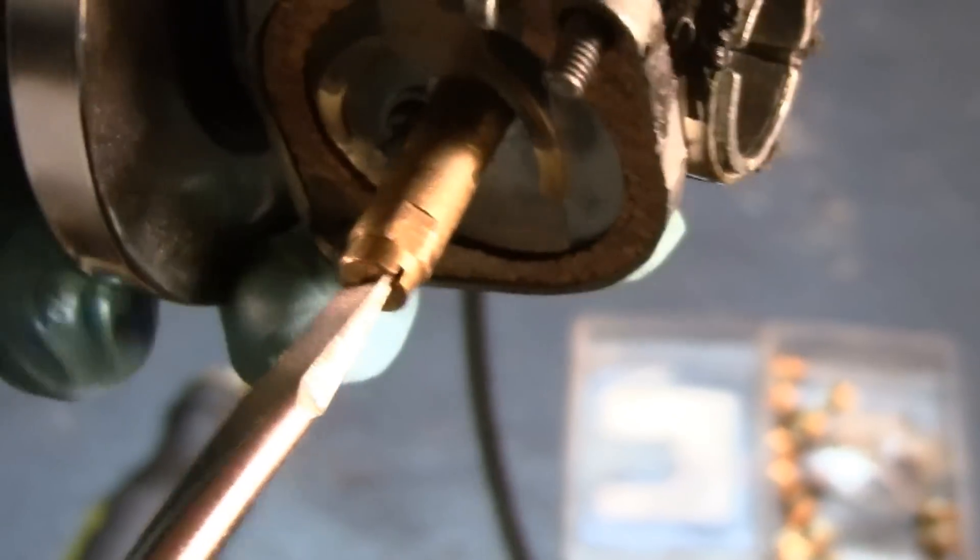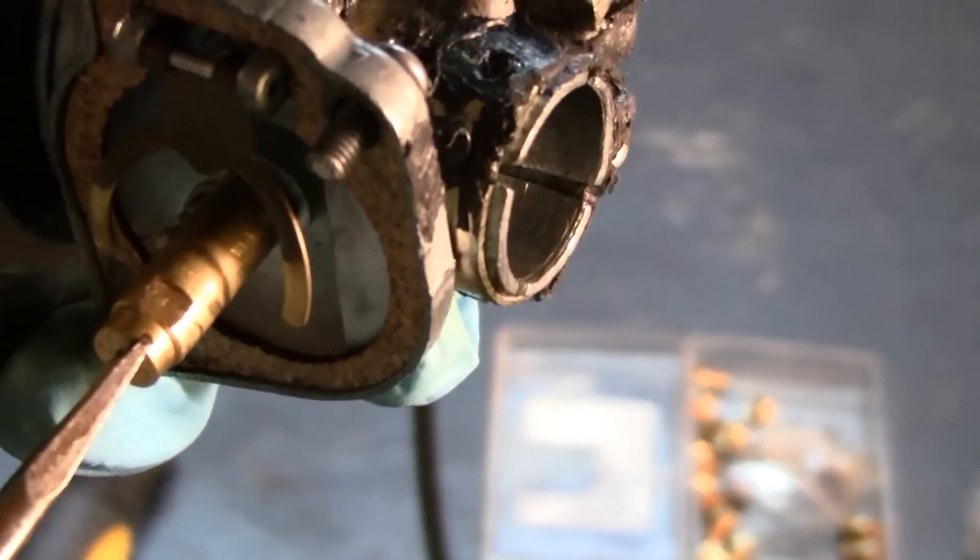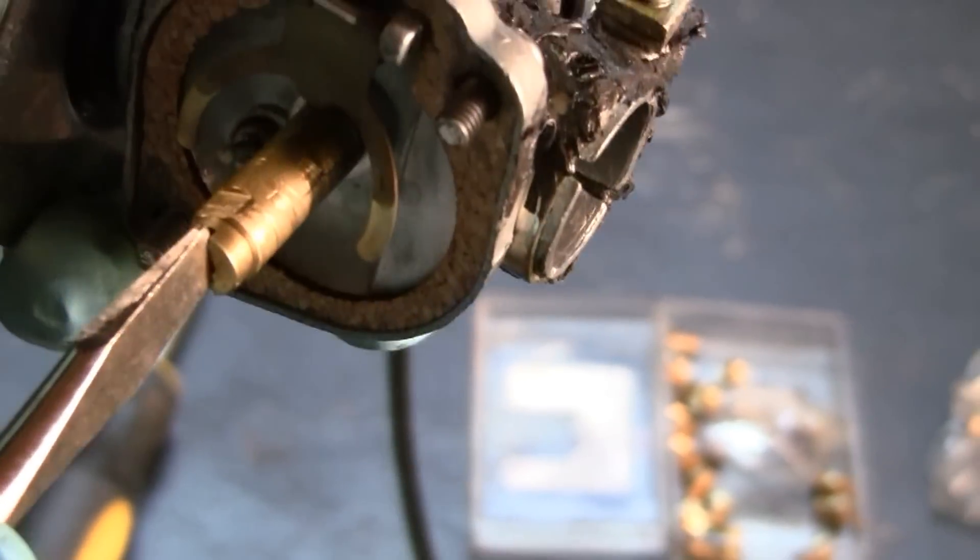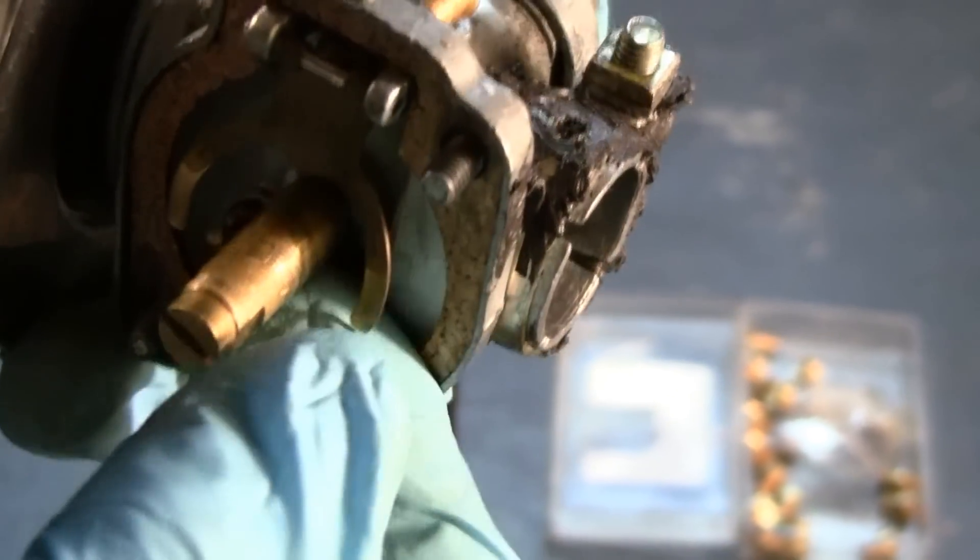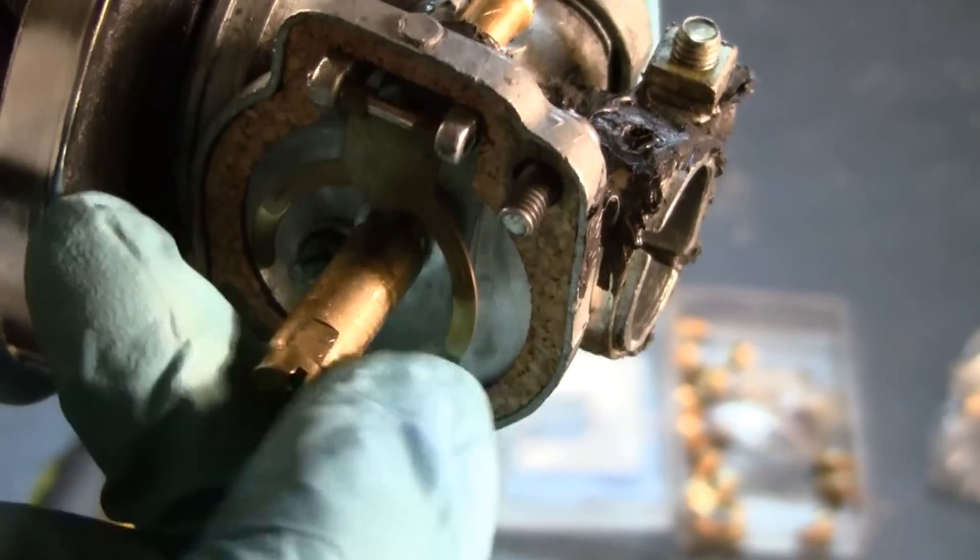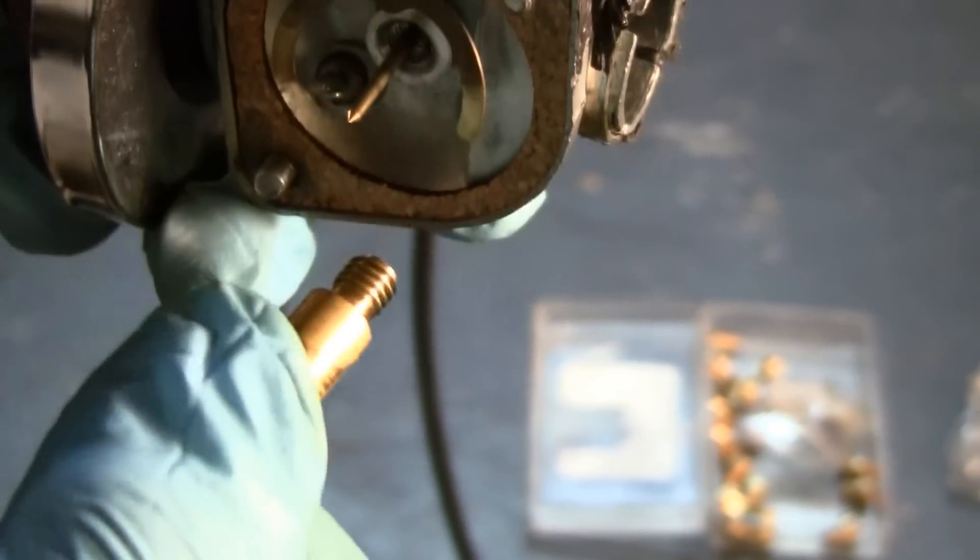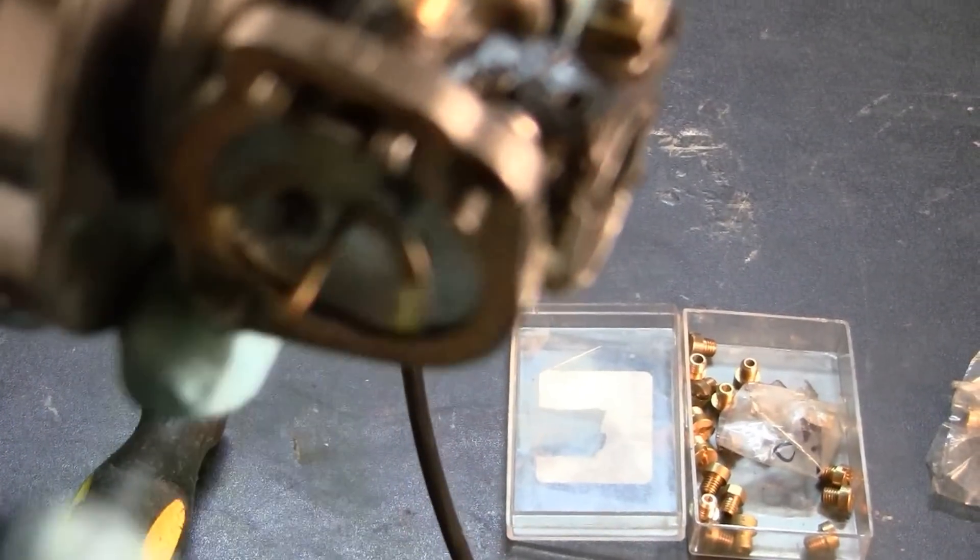Stick the flathead screwdriver in here and just untwist it. Now in some cases, what's happening right now is the main jet, which is the long brass cylindrical part, is going to be so stuck onto that original jet that it also comes out as well. That's fine, you can just take it out. That's the jet right there.